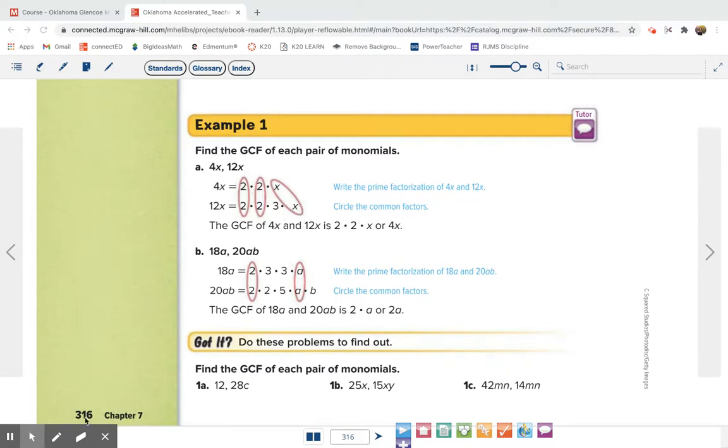So then to find the GCF, you go back and look and they circle to show you what numbers are in both of them. They both have one 2. They both have two 2s and an x. So you take this number times this number times x. So 2 times 2 is 4. 4 times x is 4x. So the greatest common factor on this one was one of them. They both have 4x in them. So that is your greatest common factor.